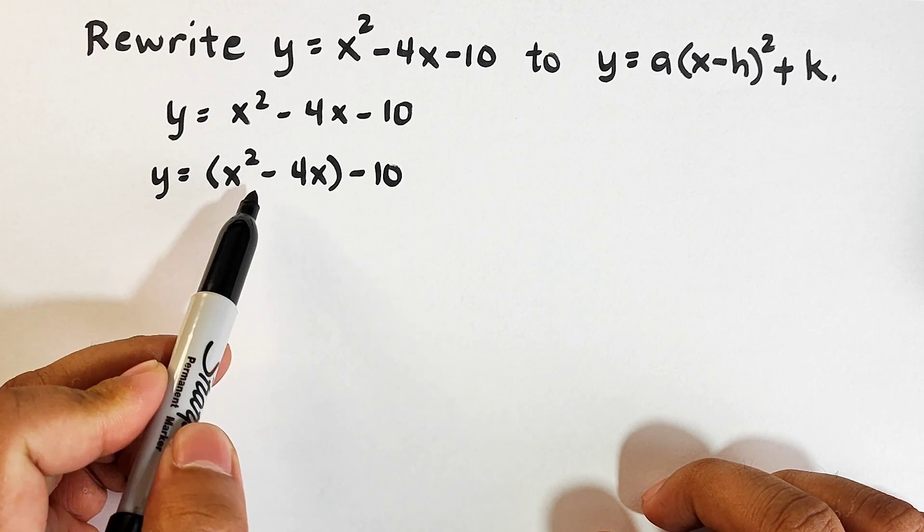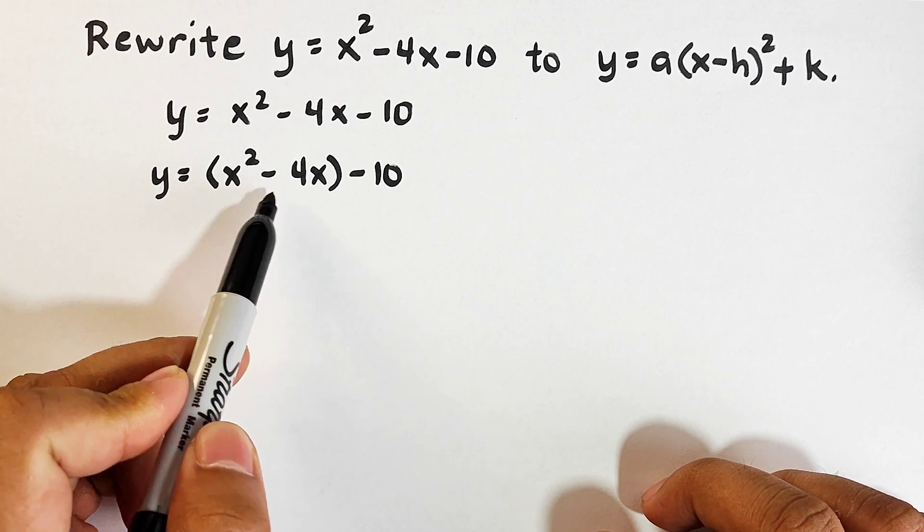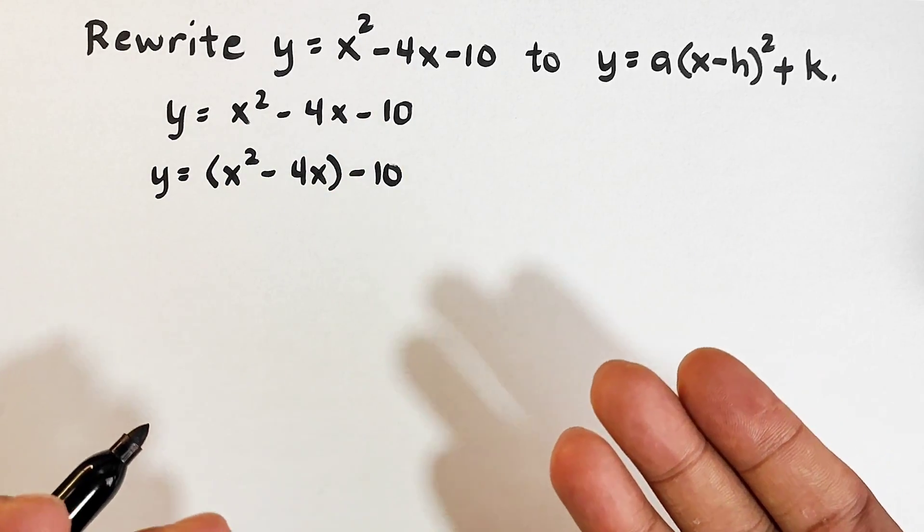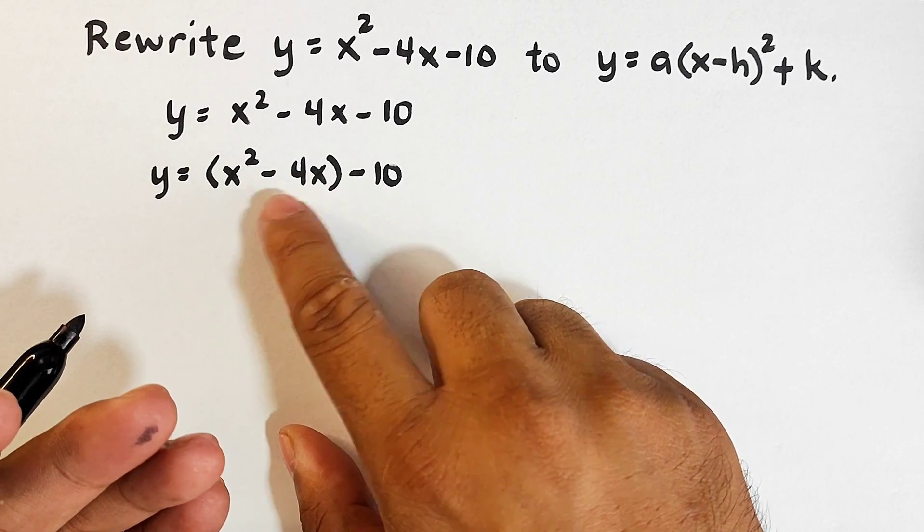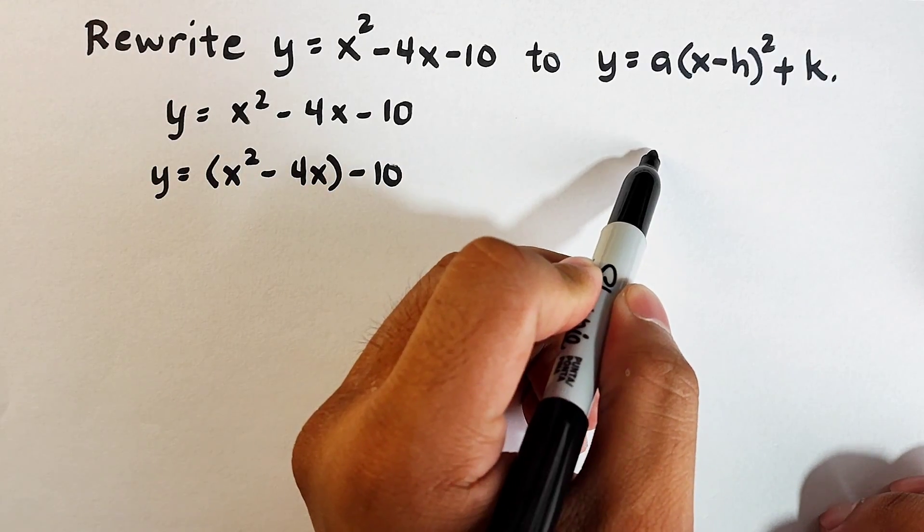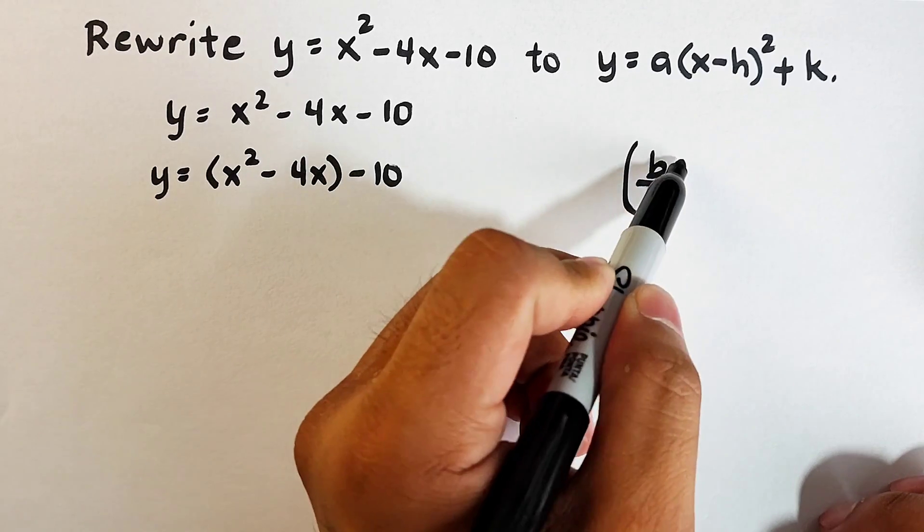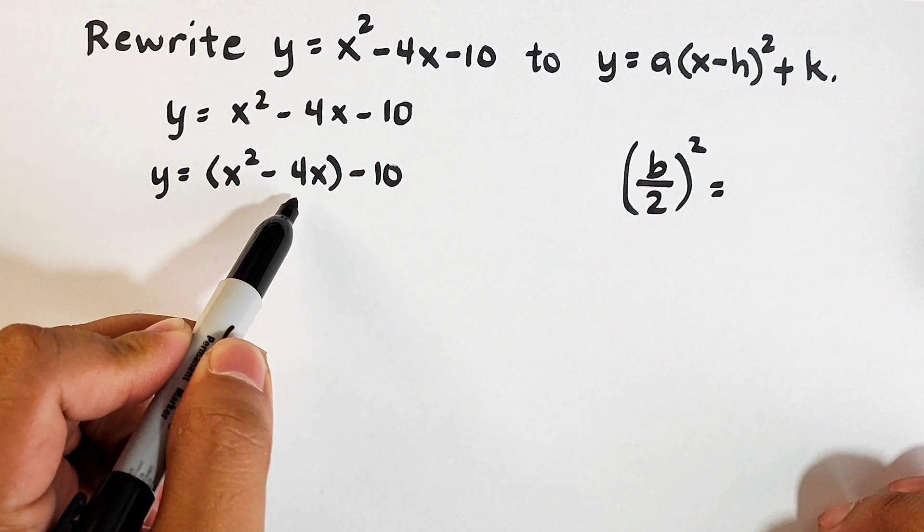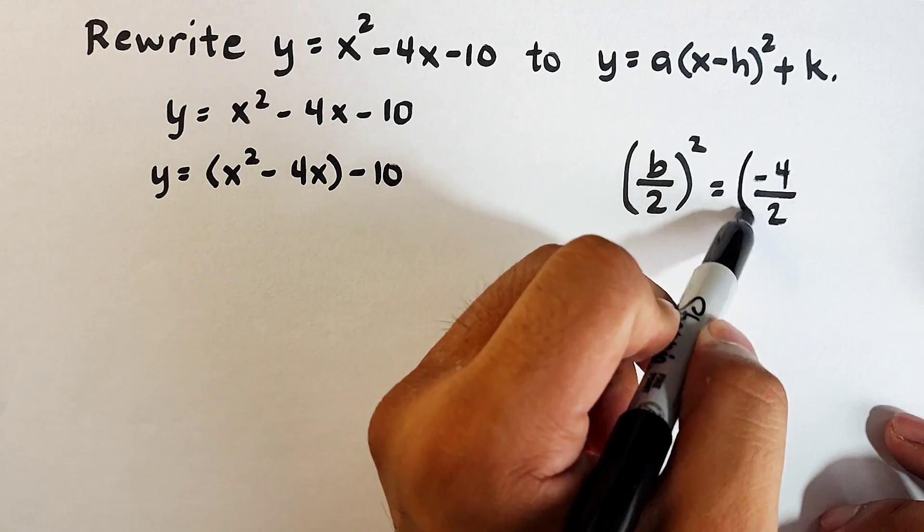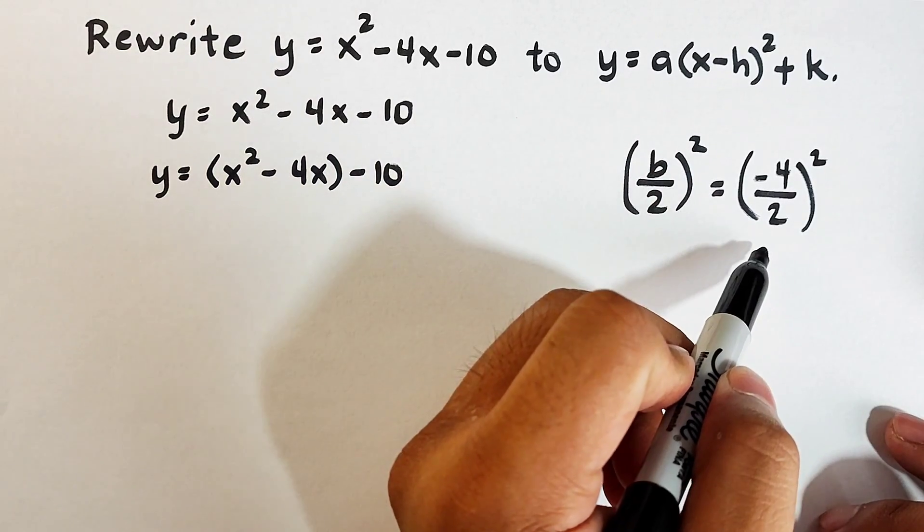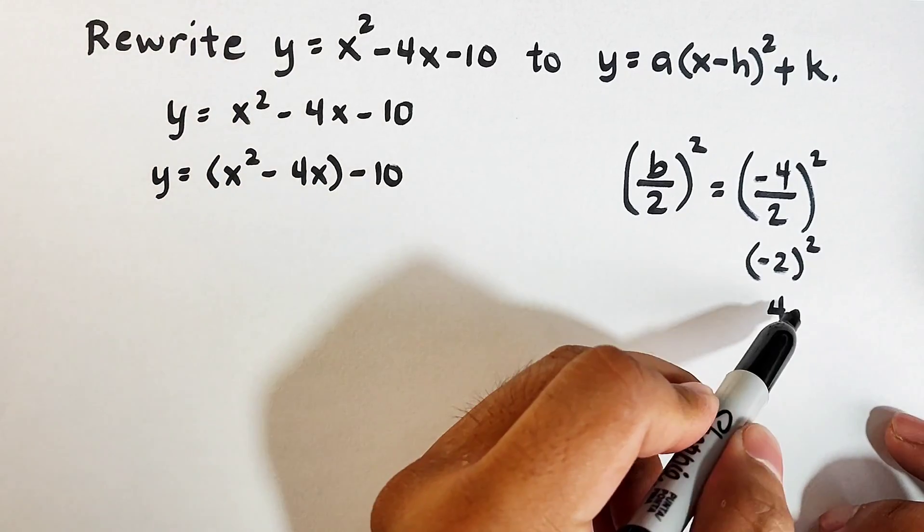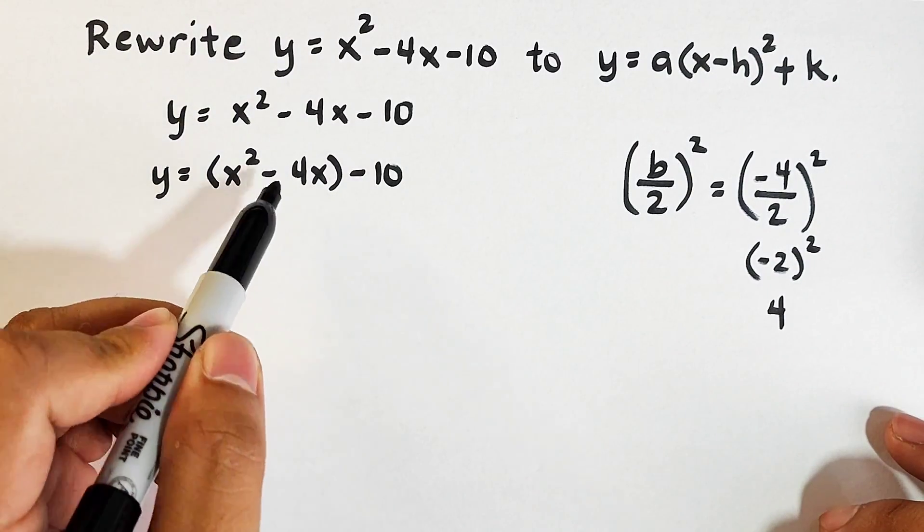Now, ang target kasi natin dito, in this x squared minus 4x is to make it a perfect square trinomial. Remember, nung complete the square tayo, ang hinanap natin is another term that will make this binomial a perfect square trinomial. So anong gagawin natin dito? We have the formula b over 2 squared. Here, in x squared minus 4x, our b is negative 4. So that is negative 4 over 2 squared. Negative 4 divided by 2 is negative 2 and then square it. As you can see, the answer is 4. This is now the constant that we will put here.